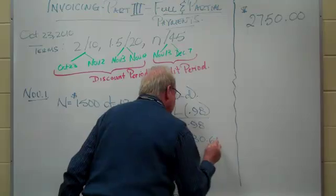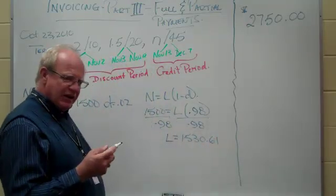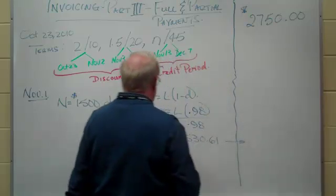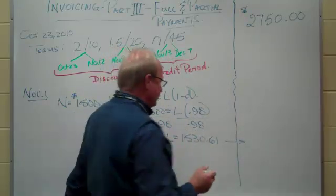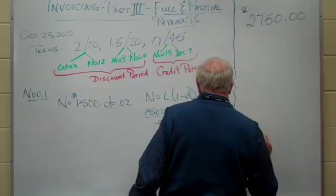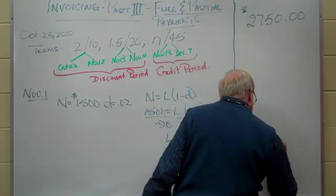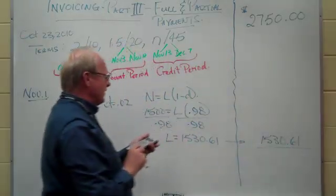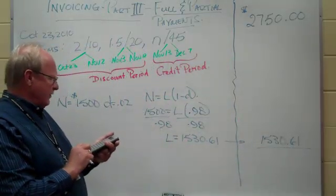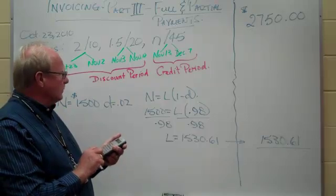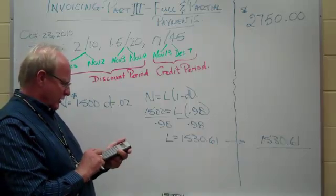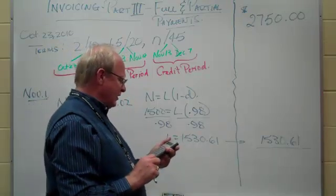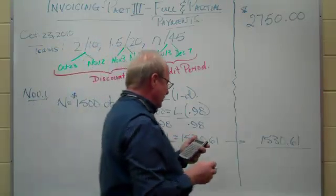So we are going to get credited with $1,530.61 on that day, even though we just sent in $1,500. We get credited with $1,530.61. Now we owe the difference between the original balance of $2,750 and $1,530.61. Do that on your calculator to make sure I am not making a mistake — and I am getting $1,219.39.